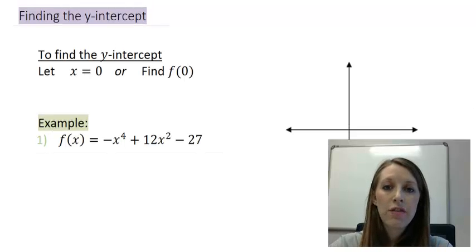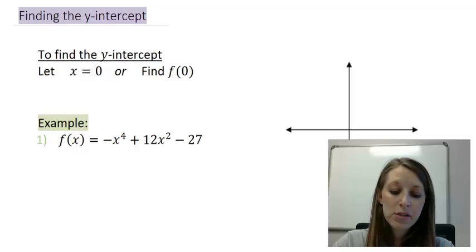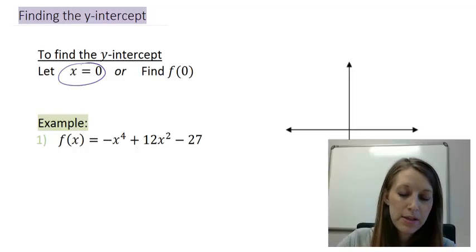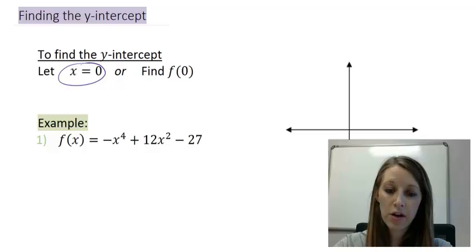So you've actually found the y-intercept multiple times before. You found it when you were trying to graph linear equations, quadratic equations, and when we were just introducing graphing in general. So it's the same process from here on out. Your y-intercept is where it's going to intercept the y-axis. So to figure out where that happens, you let your x value be 0 and you substitute that into your function.